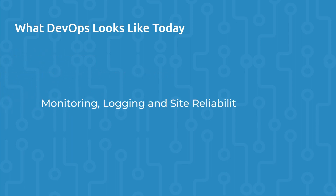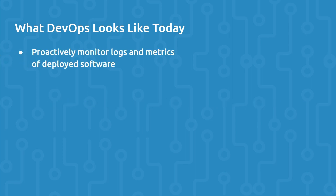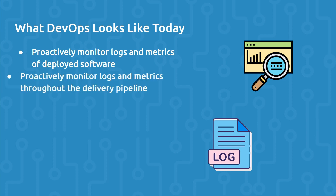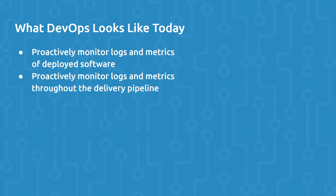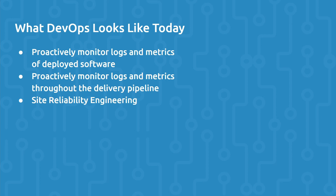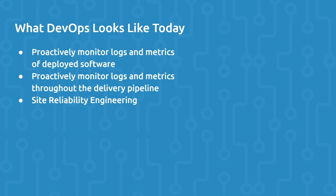And finally, we have monitoring, logging, and site reliability engineering. DevOps teams should proactively monitor logs and metrics of deployed software, and proactively monitor logs and metrics throughout the delivery pipeline. In the words of Ben Trainer who pioneered site reliability engineering, site reliability engineering is what happens when you ask a software engineer to design an operations function. Site reliability engineers are first responders when there's trouble in production, and they write software to improve the reliability of the production systems.